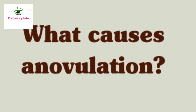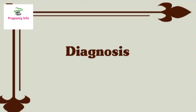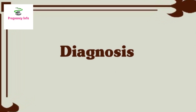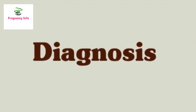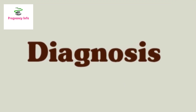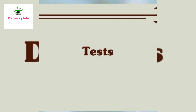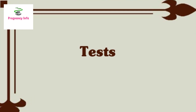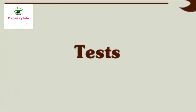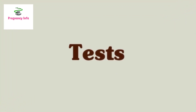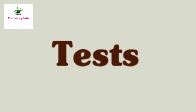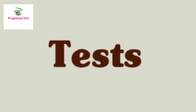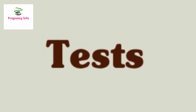How can anovulation be diagnosed? In general, the diagnosis involves identifying a heavy or irregular period. If you are trying to conceive, your healthcare provider will investigate and determine the cause of your anovulation. Tests may include blood progesterone levels, blood thyroid levels, blood prolactin levels, and an ultrasound examination of your pelvic organs.